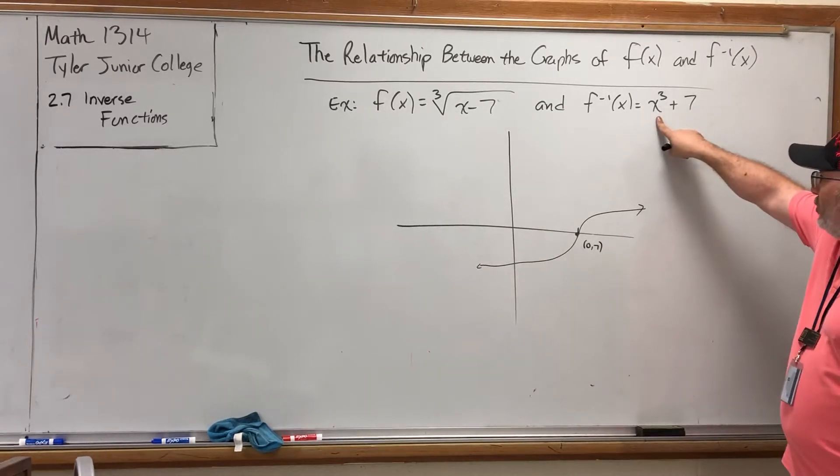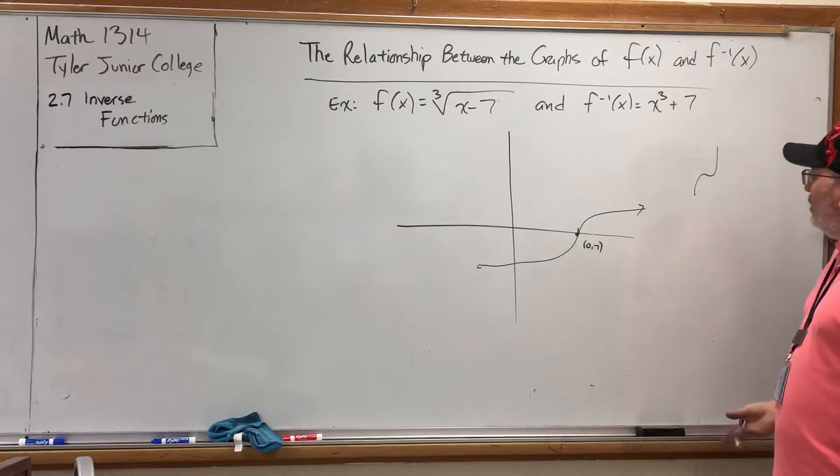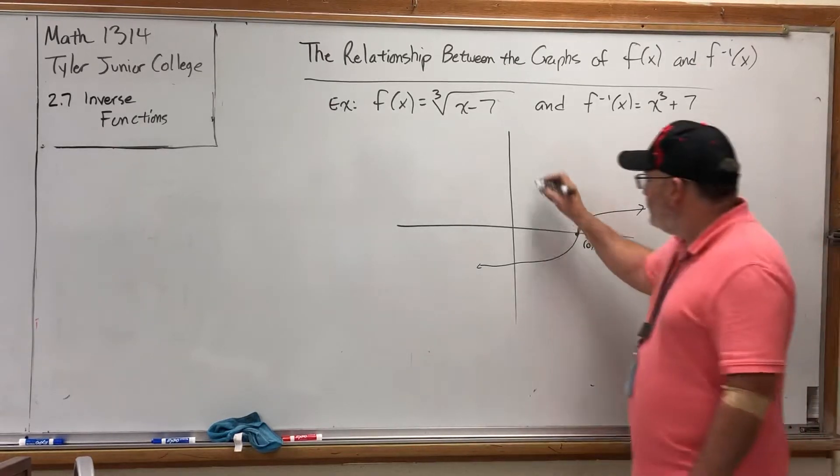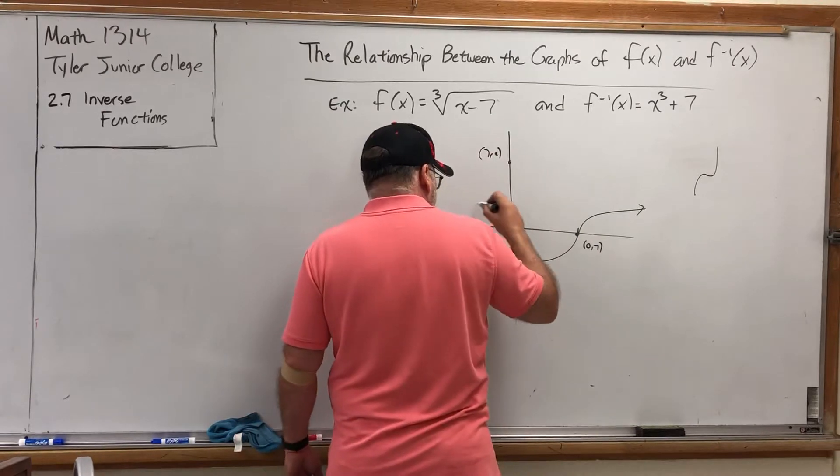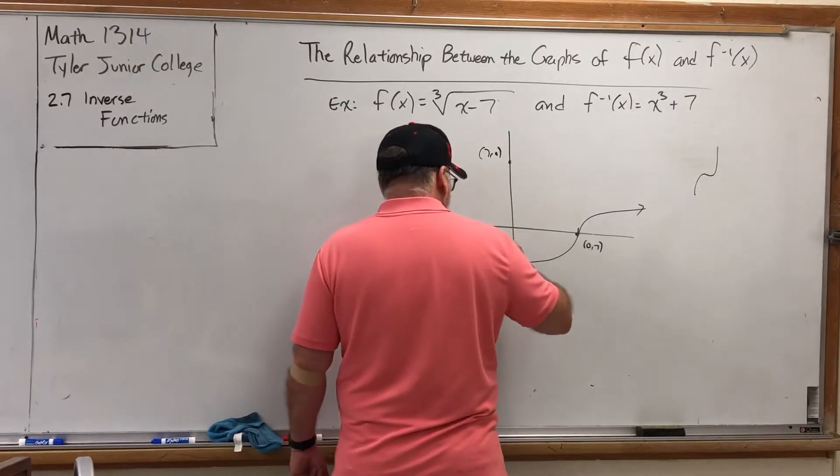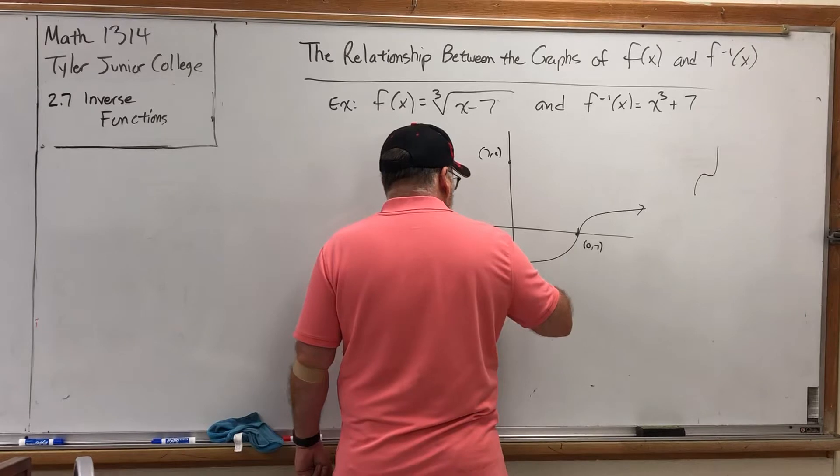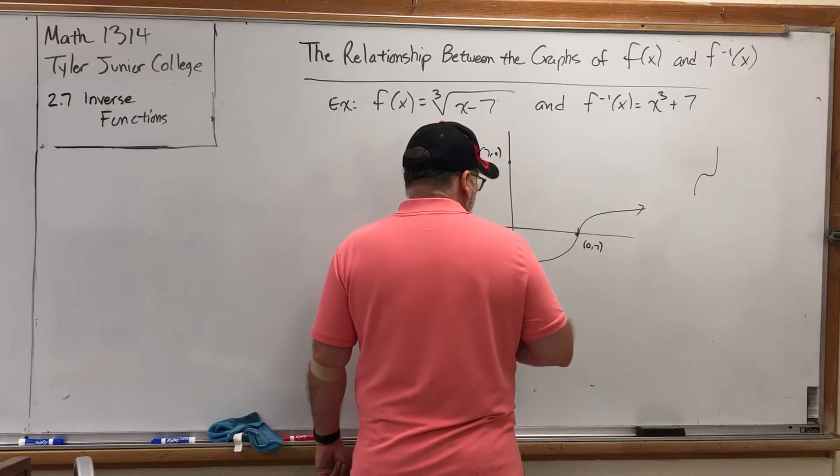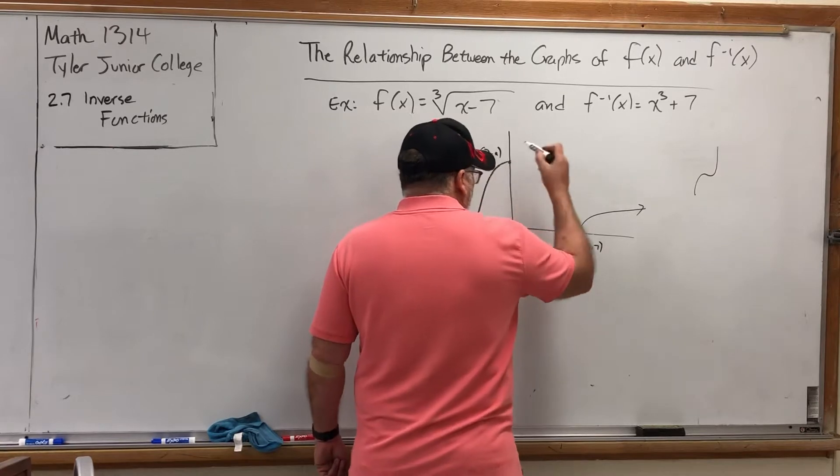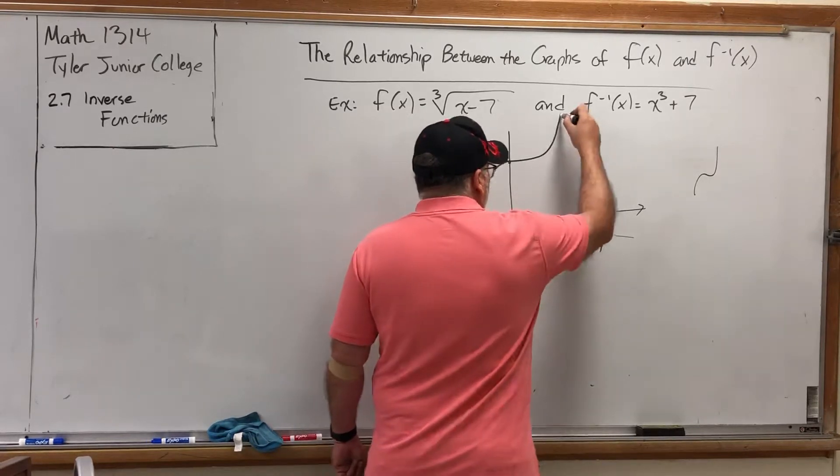But what about the graph of its inverse? This is the graph of a cubic function, which looked like that, up 7. So over here at (7,0), we have—I'm going to do my best to draw this. Our brain was trying to negotiate something and it was failing. We have that.